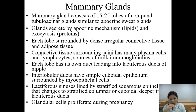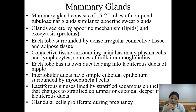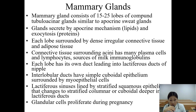Each lobe has its own duct leading into the lactiferous ducts of the nipple. Interlobular ducts have simple cuboidal epithelium surrounded by myoepithelial cells. The lactiferous sinuses are lined by stratified squamous epithelium that changes to stratified columnar or cuboidal epithelium deeper in the lactiferous ducts. Glandular cells proliferate during pregnancy.